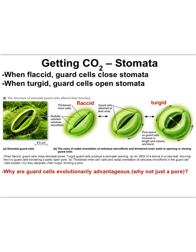It's pointless to get a bunch of carbon dioxide if there's not enough water around to react with for photosynthesis. So when water is scarce, the guard cells become flaccid and the stomata close, meaning not much carbon dioxide can get in.